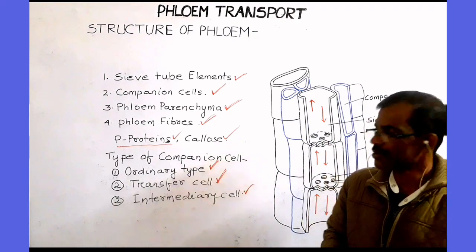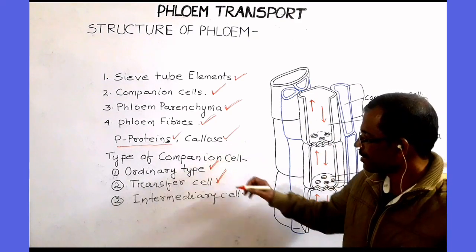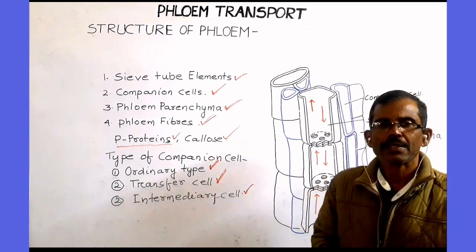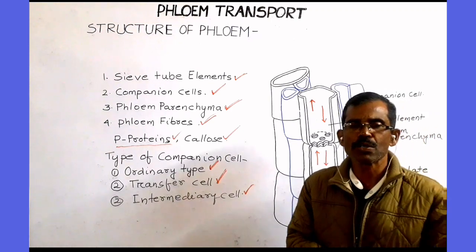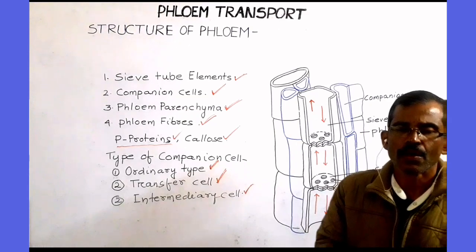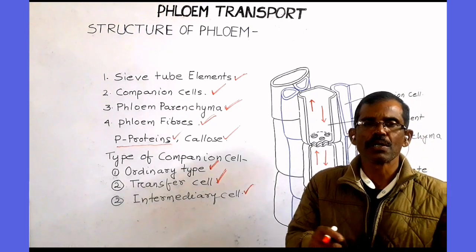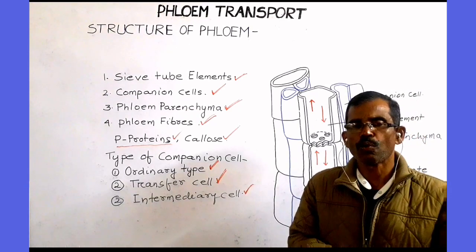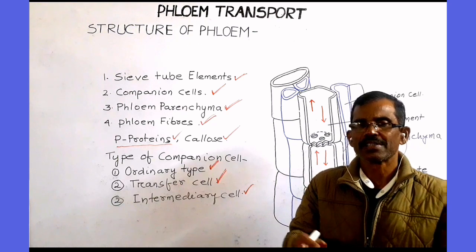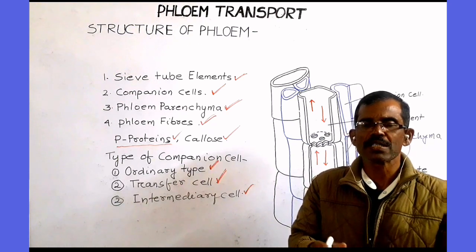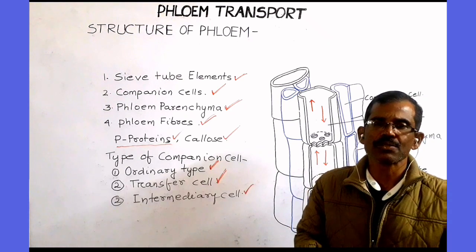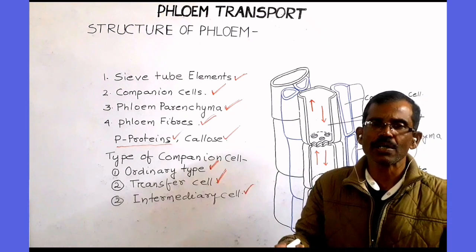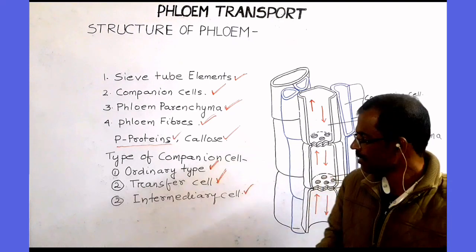The second type of companion cell is the transfer cell. Transfer cells also have numerous plasmodesmatal connections with the adjacent sieve tube elements. Transfer cells have no plasmodesmatal connections with the surrounding mesophyll cells, so they are simplistically isolated from the surrounding cells.